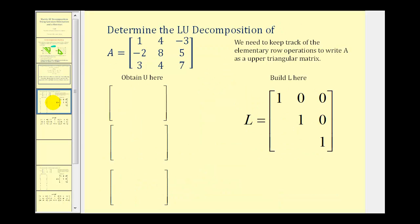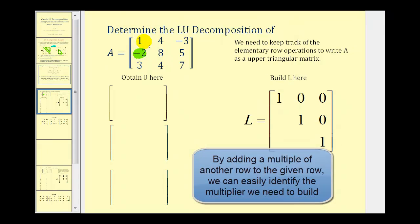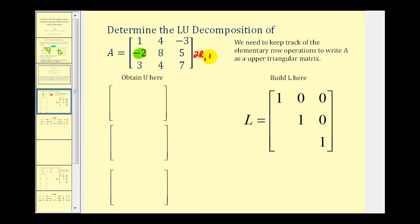So let's take a look at an example. We want to determine the LU decomposition of the given three-by-three square matrix. We want to perform row operations to obtain an upper triangular matrix, which means we need zeros in the three below-diagonal positions. Let's start by obtaining a zero in the first target position. We want to add some multiple of another row to row two. We can replace row two with two times row one plus row two to obtain a zero in that position.